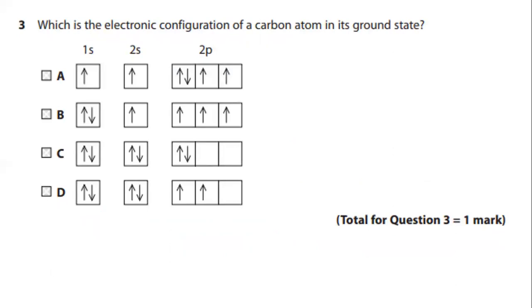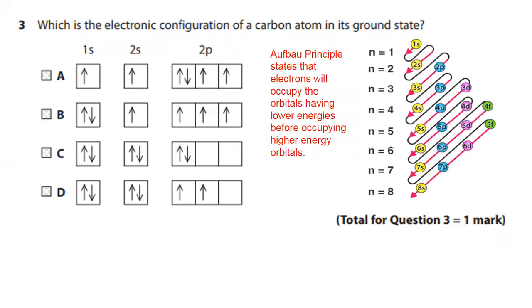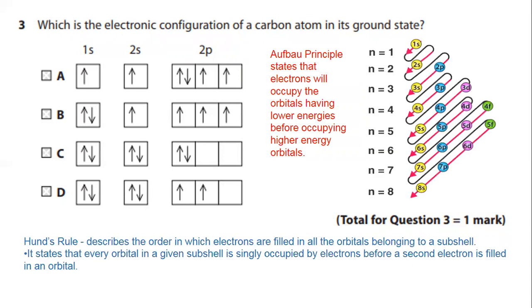Question 3. Which is the electronic configuration of a carbon atom in its ground state? To do this, you will have to revise the Aufbau principle and Hund's rule. Aufbau principle states that electrons will occupy the orbitals having lower energy before occupying the higher energy orbitals and it provides the order of energy also.